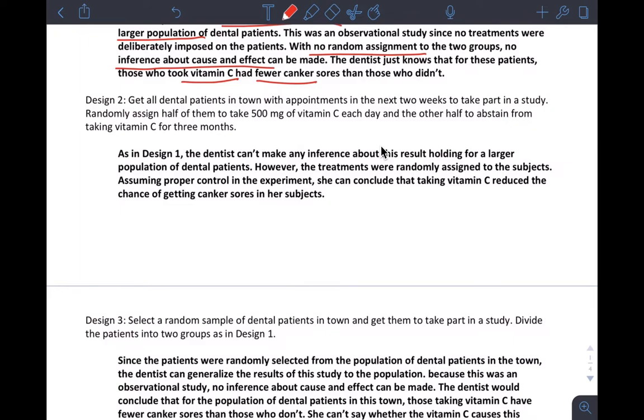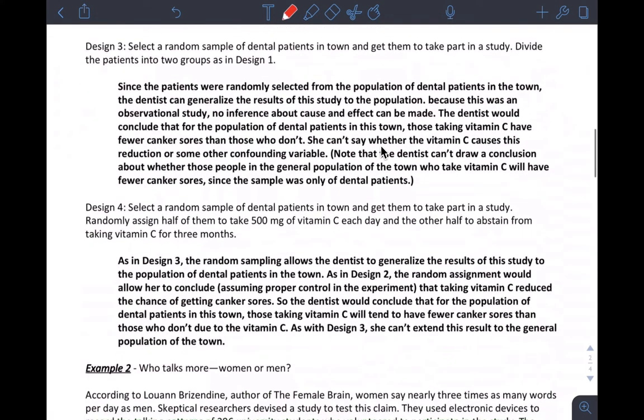And then design number two, this is a bit different because randomly assigning them to treatment groups, that lets me do cause and effect. So the treatments were randomly assigned to the subjects. Assuming that the experiment was well designed, we can—this is the cause and effect—vitamin C reduced the chance of getting sores. So this is the cause and effect. But again, I can't take this back to the population because there was no random selection.